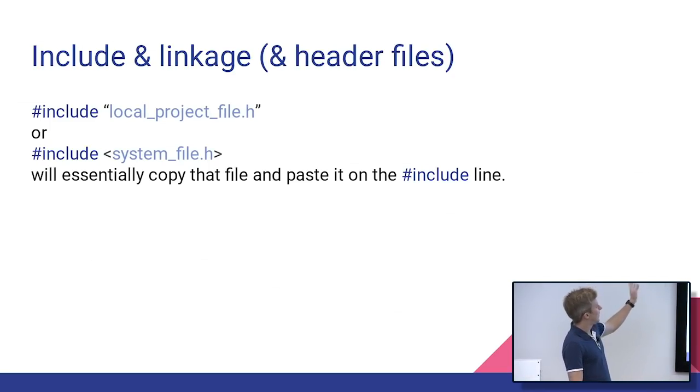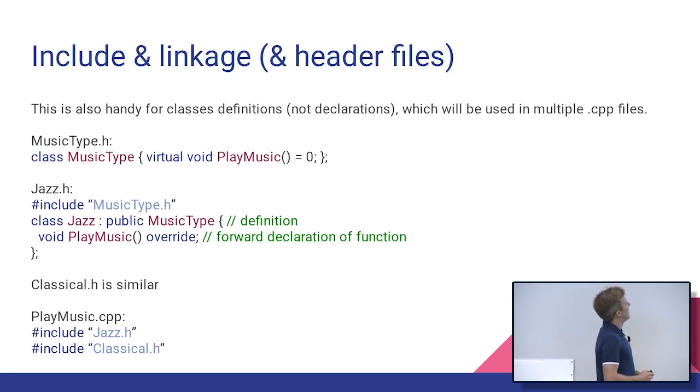So then we mentioned there's the two ways of including. There's with quotes if it's our own file. And then there's the angles if it's like a system file. That happens at a preprocessor step before the actual meat of C++ happens. So what this ends up doing is effectively copying and pasting. So it'll go open that file, copy the whole content of the file, and then paste it on the line that was including it. It's not 100% true, but that's like 99% true.